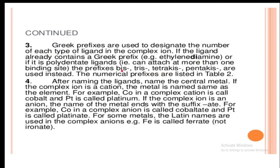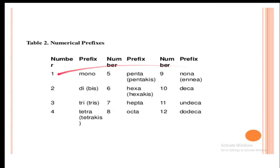The prefix table is as follows: 2 is di (or bis), 3 is tri (or tris), 4 is tetra (or tetrakis), 5 is penta (or pentakis), 6 is hexa (or hexakis), 7 is hepta, 8 is octa, 9 is nona, 10 is deca, 11 is undeca, 12 is dodeca.